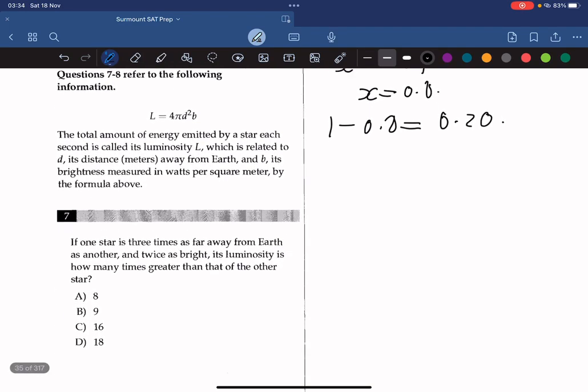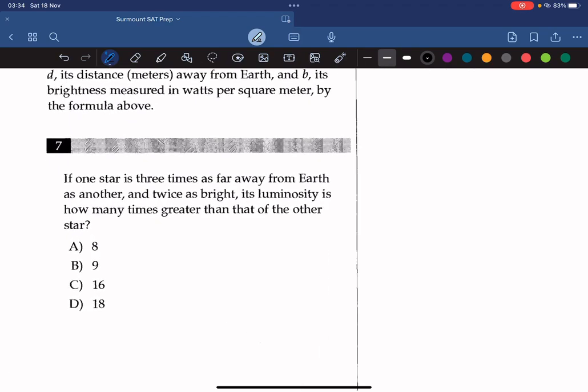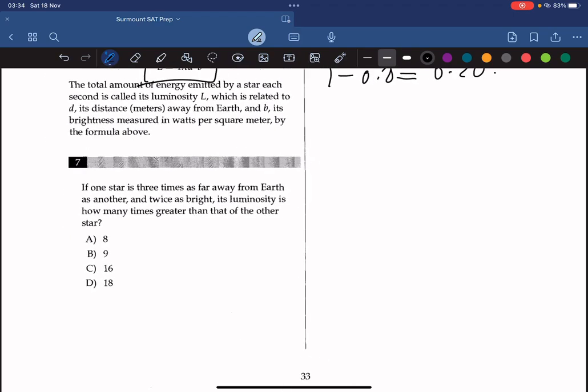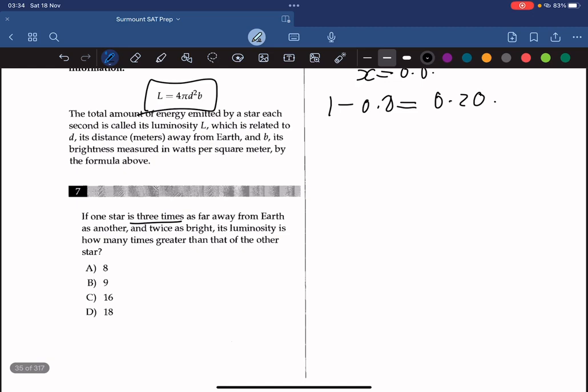Alright, we have a lengthy problem here. Questions 7 and 8 refer to the following information: the total amount of energy emitted by a star each second is called luminosity L, which is related to distance D away from Earth, and B, its brightness measured in watts per square meter by the formula above. Question 7: If one star is three times as far away from Earth as another and twice as bright, its luminosity is how many times greater than that of the other star?